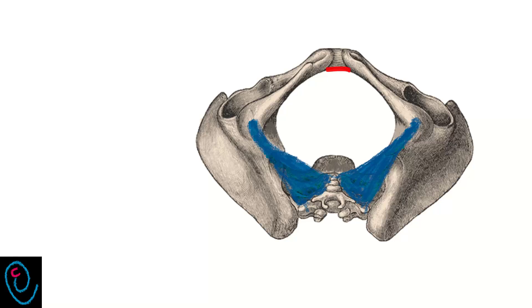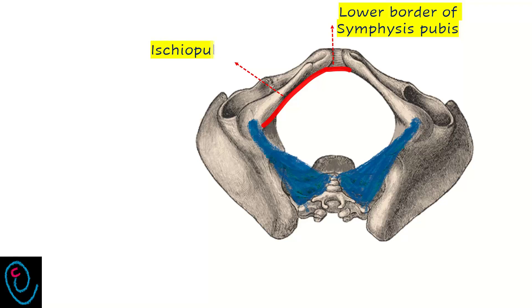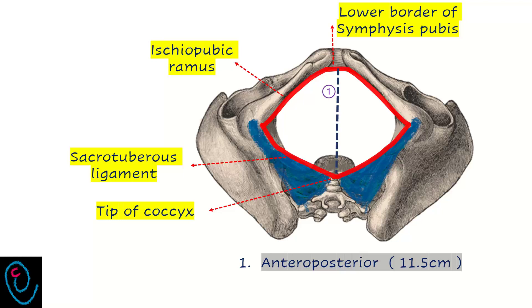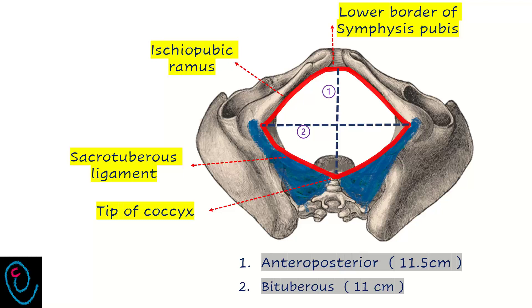The plane of anatomic outlet extends from the lower border of the symphysis pubis through the ischiopubic rami to the ischial tuberosity, through the sacrospinous ligaments, to end at the lower end of the coccyx. It has an anteroposterior diameter from the lower border of the symphysis pubis to the tip of the coccyx measuring 11.5 cm, and a transverse diameter extending between the two ischial tuberosities, known as the bituberous diameter, measuring 11 cm.